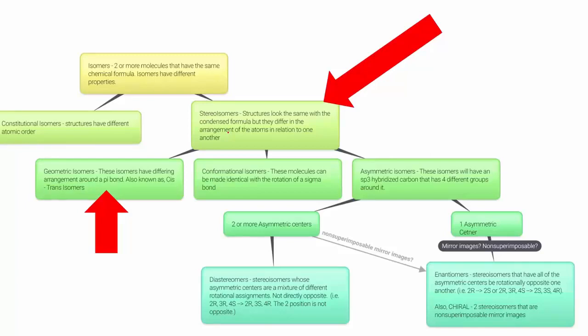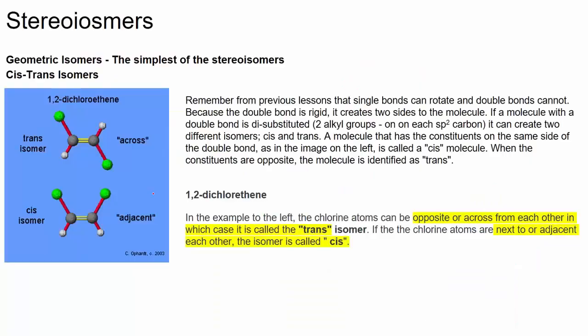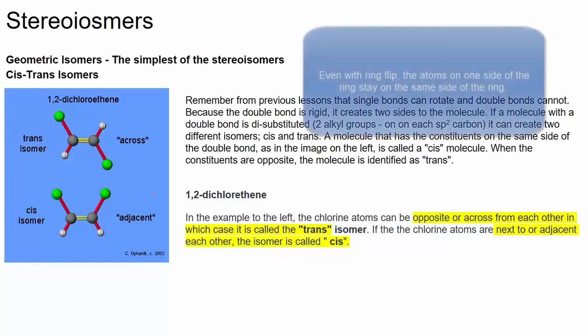Now we're going to look at stereoisomers and we're going to start with geometric isomers. Geometric isomers are isomers that have a different arrangement around a pi bond or around a ring. These are known as cis-trans isomers.